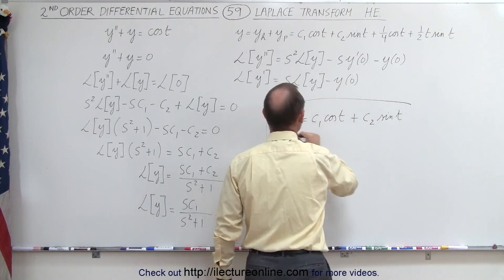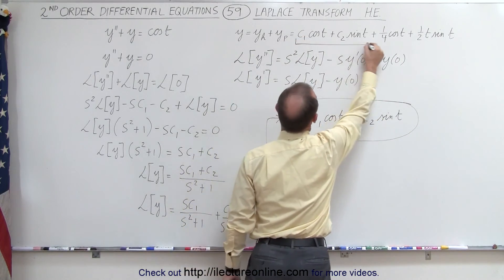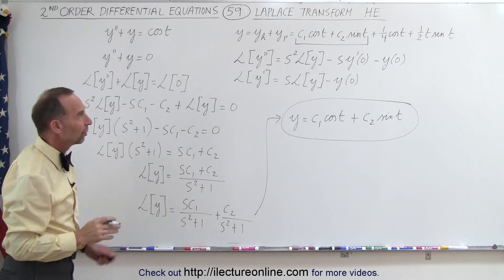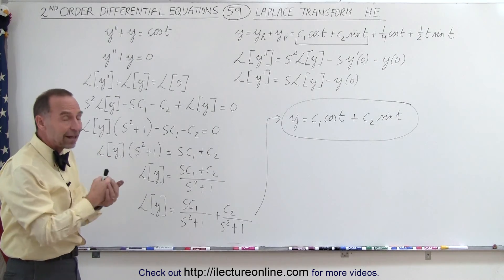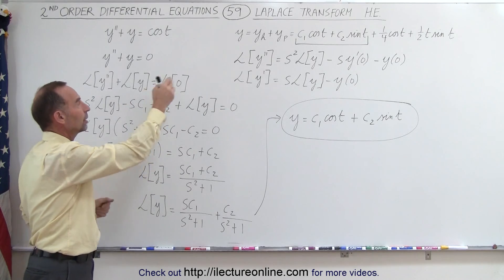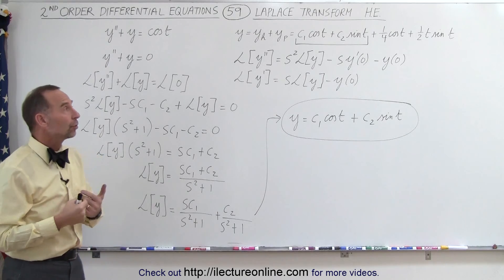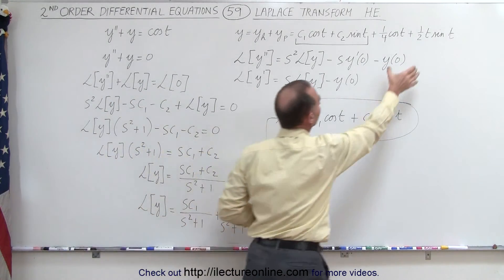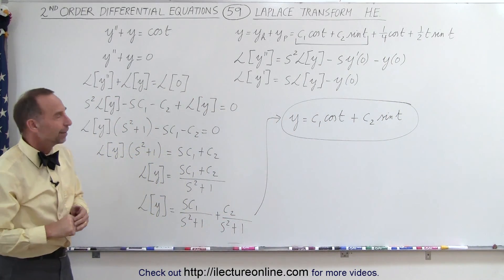Sure enough, this is the homogeneous part of the equation, which is the same as the homogeneous part of the solution we obtained in the previous example. So you can see that even if you're not given the initial values of y and y prime, you can still use the Laplace transform to find the homogeneous part of the solution. Next, we're going to find the total solution and the particular part using the Laplace transform, so stay tuned.